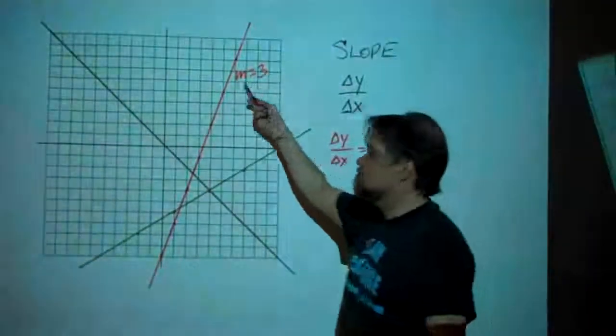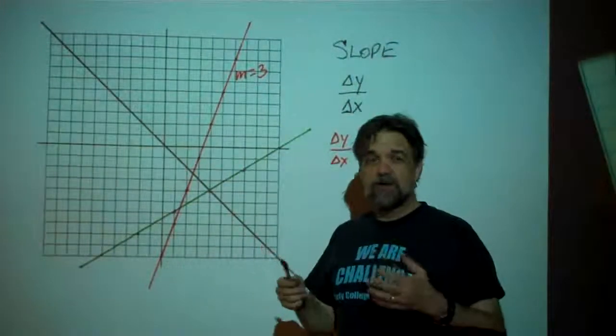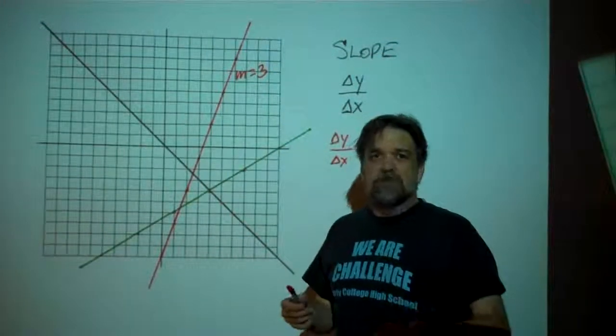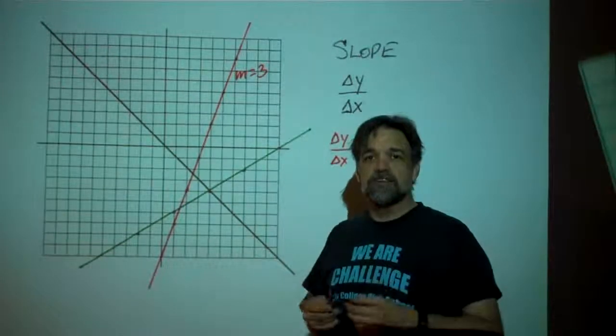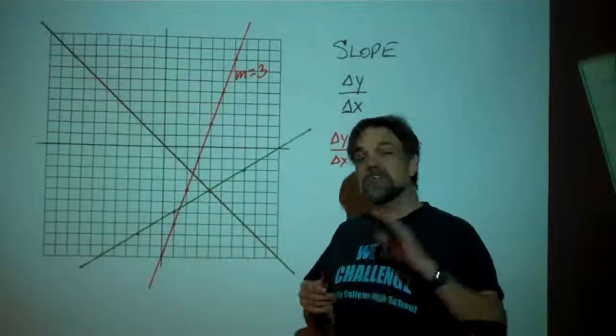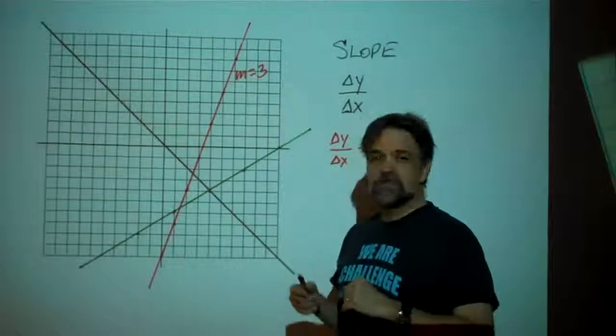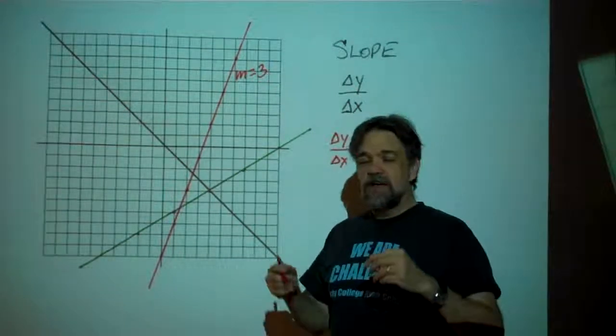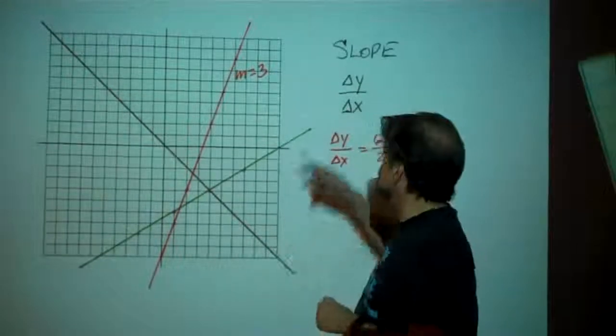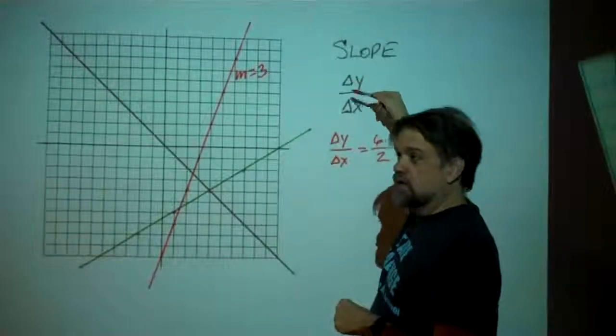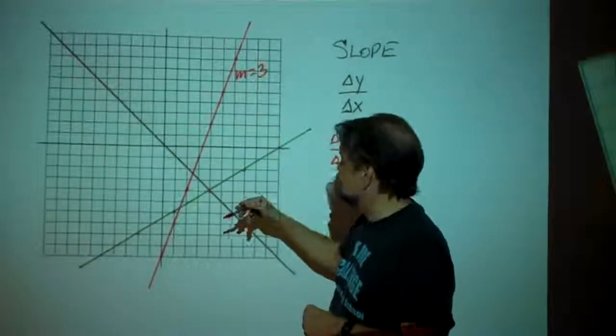Now, you might be looking at this m equals 3 and you might be thinking, slope? m? Yeah, me too. I have no idea why we abbreviate slope with m, but most algebra textbooks do. A lot of college algebra textbooks use the letter a instead of m. It doesn't matter though. The main thing to remember is slope is the difference in y's divided by the difference in x's. So the slope of this line is 3.